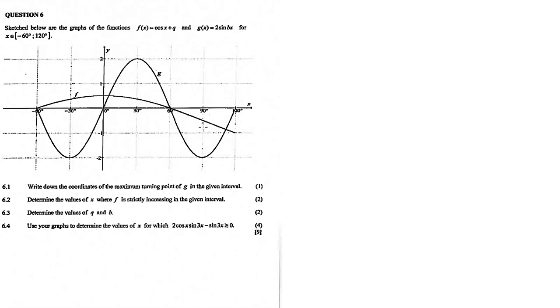In this video, we discuss question 6. It's about trigonometric functions f(x) and g(x) on the same system of axes, plotted between minus 60 degrees and 120 degrees. In the description below are links for my questions for this question paper. Thanks for tuning in.